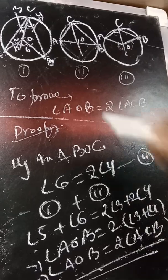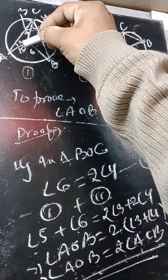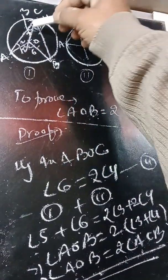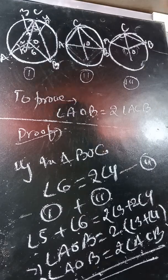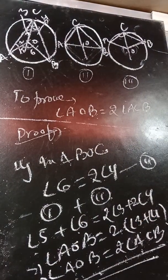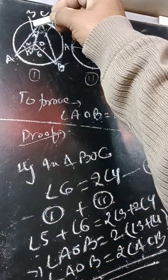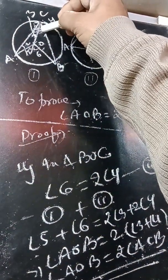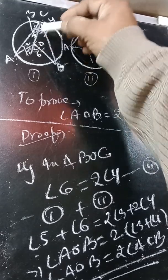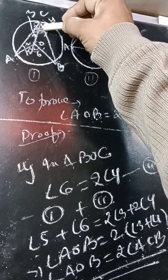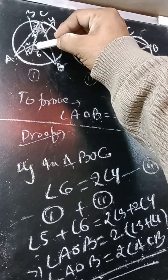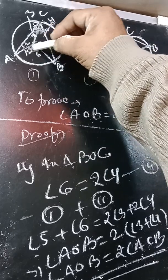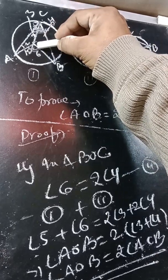The angle subtended by an arc at the center is double the angle subtended by it at any point on the remaining part of the circle. It means if angle C is 30 degrees, the central angle will be 60 degrees. If angle C is 45 degrees, we get 90 degrees. If angle C is 60 degrees, we get 120 degrees.